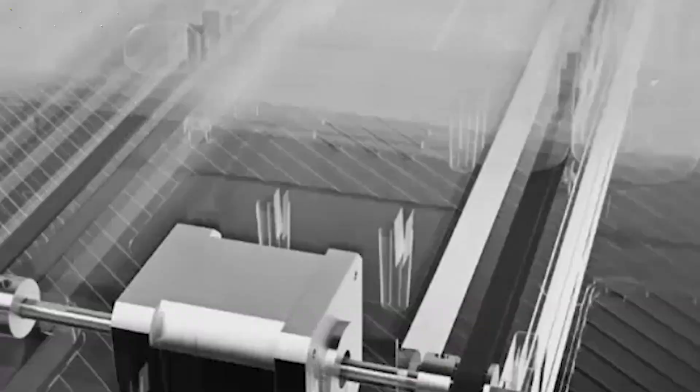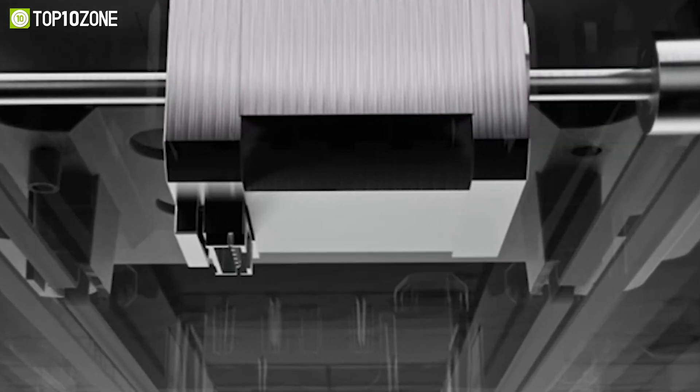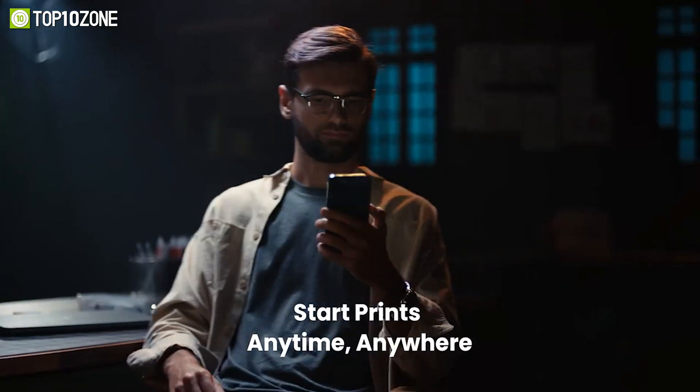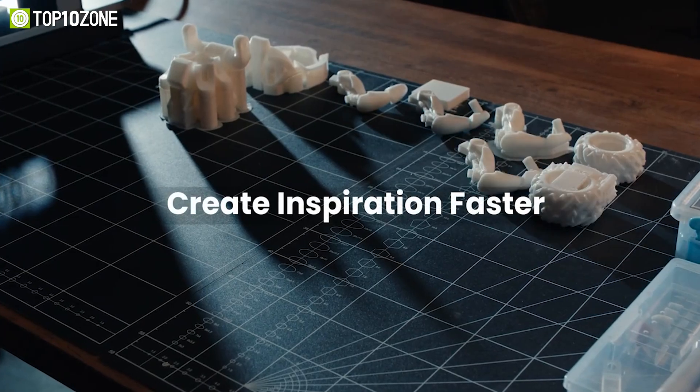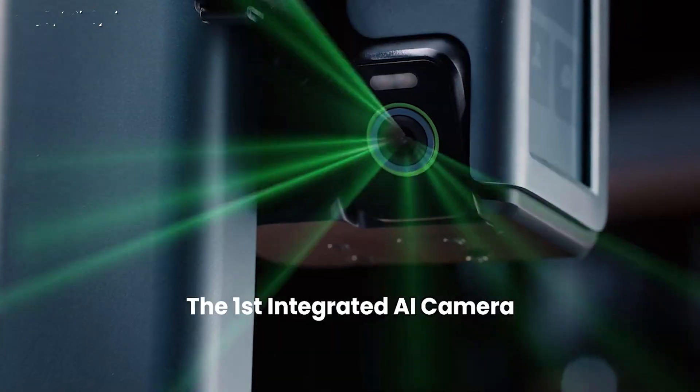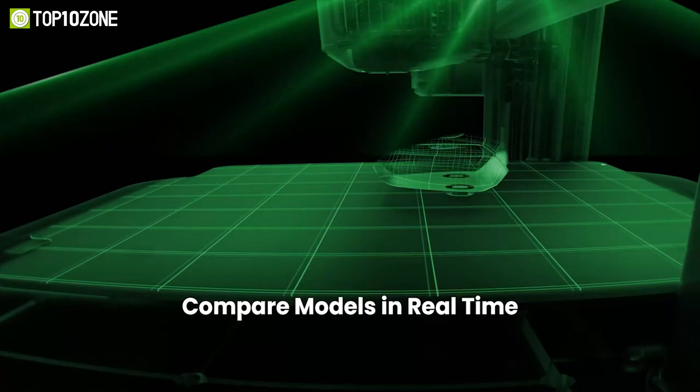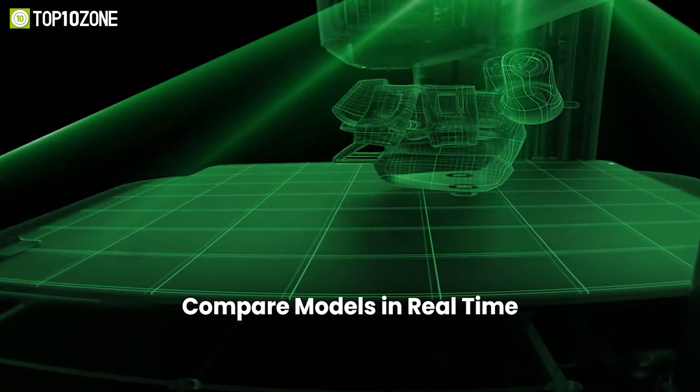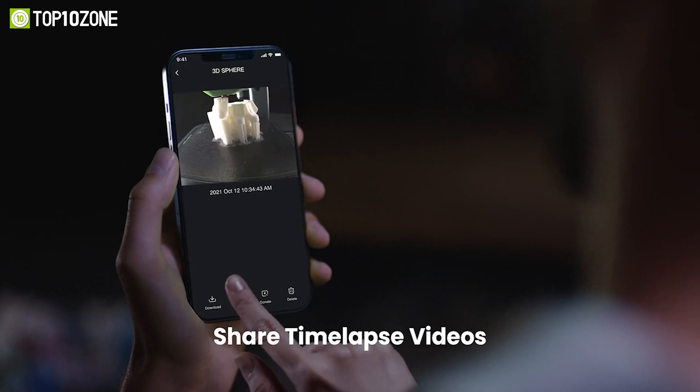It offers smooth printing in every 0.1mm thick layer, even if you're printing 3D models of tools, jewelry, or gifts five times faster. Anker's AI camera recognition system compares your print in real time with the original design, and you can keep track of your print by viewing HD videos in real time.